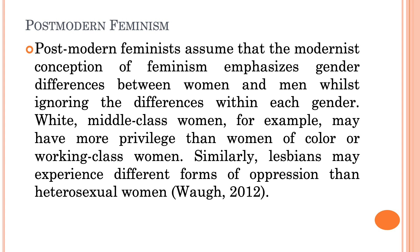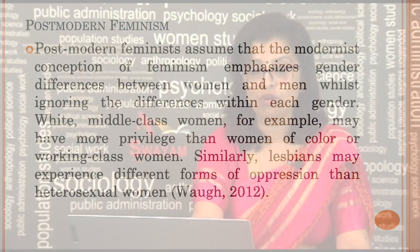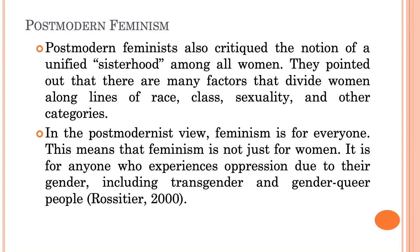Postmodern feminists assumed that the modernist conception of feminism was only emphasizing the differences between men and women. But there could also be differences between women themselves and the kind of experiences they had of the exploitation they were a part of. Postmodern feminism critiqued the notion of sisterhood which had been created by the second wave. It pointed out that various other factors like class, race and other experiences could lead to differences in feminist perspective.